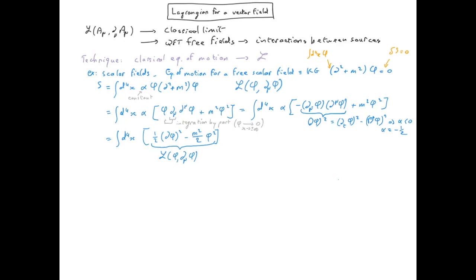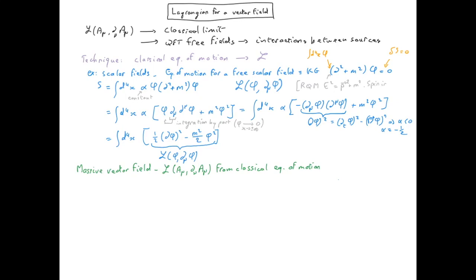We now want to use the same technique to determine the Lagrangian for a massive vector field. So which classical equation of motion should we start with? In the case of the massive scalar field, we had the Klein-Gordon equation, and it makes sense to consider that each component of the vector field also obeys a similar Klein-Gordon equation. That's not such a crazy idea, because if we step back to relativistic quantum mechanics, we get the Klein-Gordon equation simply by requiring that the particle obeys E squared equal p squared plus m squared. That's a property which doesn't depend on the spin. Therefore, we expect the same relationship between energy and momentum for a vector field, and it makes sense to impose each component of the massive vector field to obey the Klein-Gordon equation.